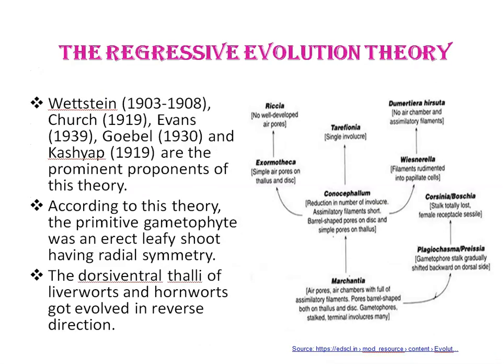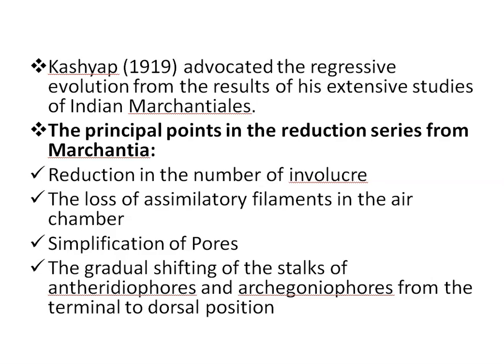The second theory is the downgrade or the regressive ablation theory. Wettstein, Chard, Evans, Gebel, and Kashyap are the most prominent proponents of this theory. According to this theory, the primitive gametophyte was an erect leafy shoot having radial symmetry, for example in the members of Calobryales and true mosses, and the dorsiventral thalli of liverworts and hornworts evolved in the reverse direction, i.e. regression of increasing simplicity. Kashyap, in 1919, advocated regressive evolution from the results of his extensive studies of Indian Marchantiales.